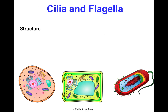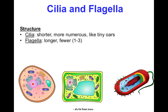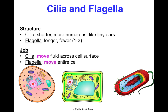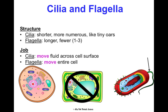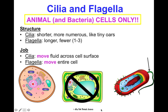Cilia are shorter and more numerous — like tiny hairs or oars surrounding the cell. Flagella are longer and fewer, usually one to three, and more like tails. Their job is movement: cilia specifically move fluid across the cell surface, such as in the cells lining your throat. Flagella move the entire cell — like on sperm cells to help them reach the egg. They're not in plant cells but are found in animal cells and bacteria cells.